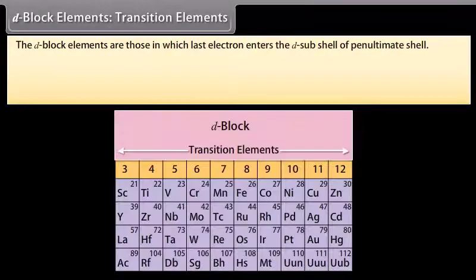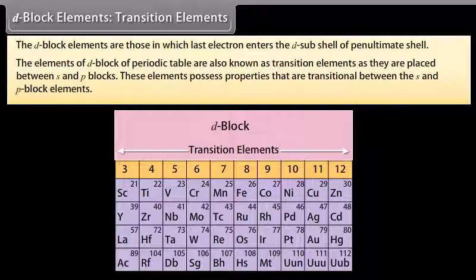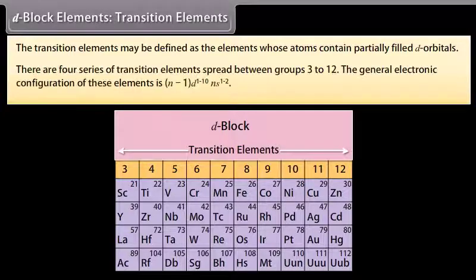The D-block elements are those in which the last electron enters the D-sub-shell of the penultimate shell. The elements of the D-block of the periodic table are also known as transition elements, as they are placed between S and P-blocks. These elements possess properties that are transitional between S and P-block elements. The general electronic configuration of these elements is (n-1)d¹⁻¹⁰ns¹⁻².